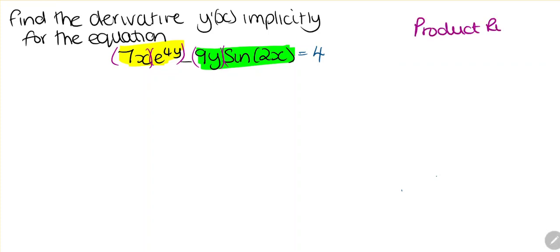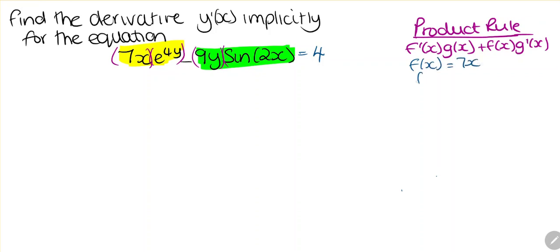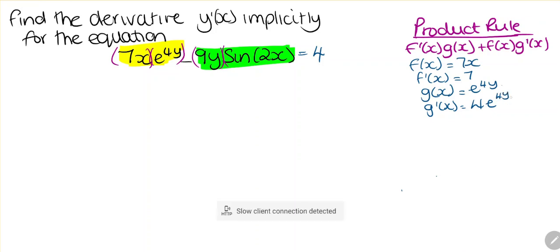The product rule is f prime of g(x) plus f(x) multiplied by g prime of x. For our first term, f(x) is 7x and f prime of x is 7. Our second term, g(x), is e to the 4y, and g prime is going to be 4e to the y. And when we have a y, remember, we're going to multiply this by y prime.